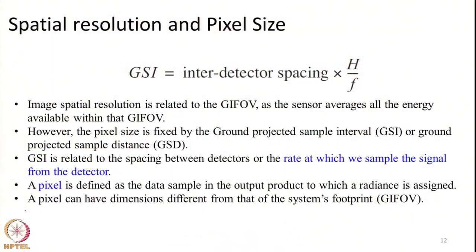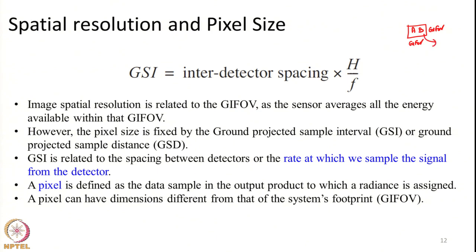Our ability to resolve two features in the spatial domain improves when the objects are far apart, or when the IFOV of the system is smaller. If the IFOV covers the entire area surrounding two objects together, the radiance from both will be collected together and recorded as one single value in the sensor.